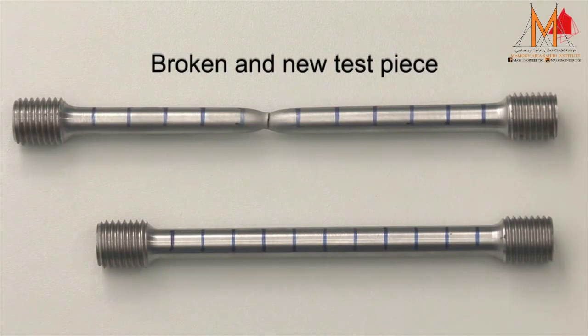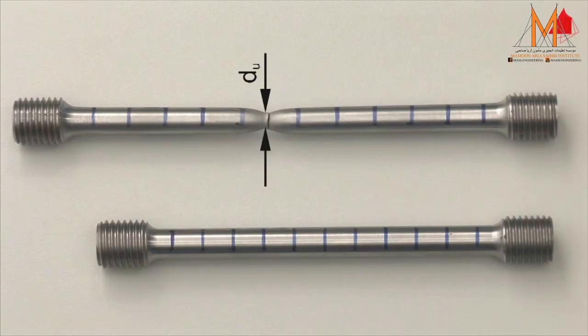Please note that the percentage elongation after fracture depends on the length to diameter ratio. By measuring the smallest diameter at the point of fracture, the percentage reduction of area can be calculated. It describes the reduction of cross-sectional area at the point of fracture in relation to the original cross-sectional area.